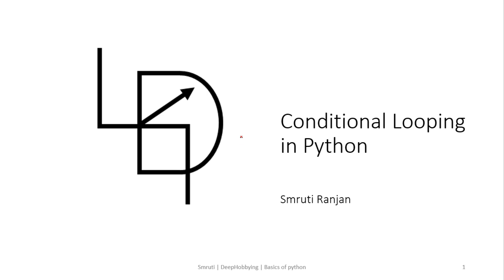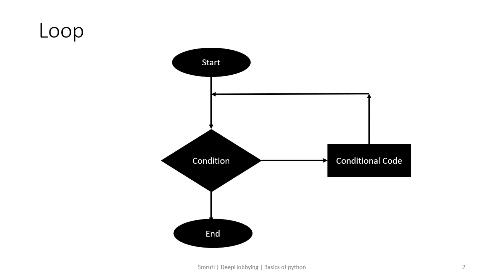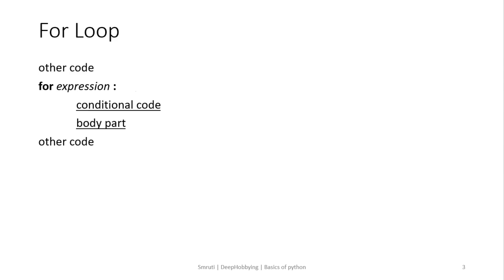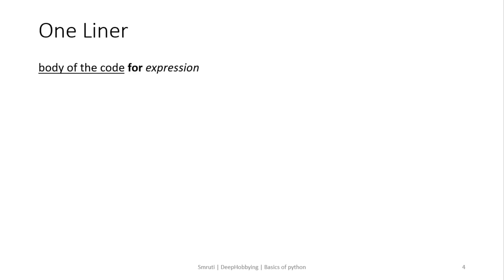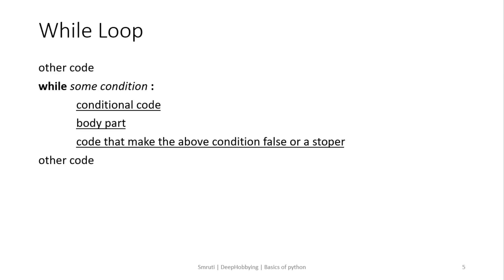Welcome back to Part 2 of conditional looping in Python. In the previous video we covered the for loop flow diagram, how to write a for loop in Python, and also how to write for loop code in one line — what we call a one-liner — which is a very easy and handy way of writing code. In this tutorial we're going to discuss other loops, such as the while loop.